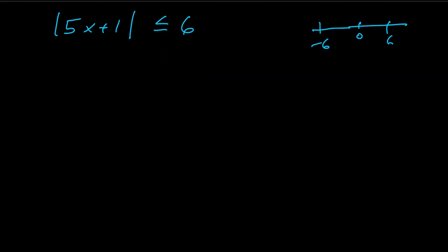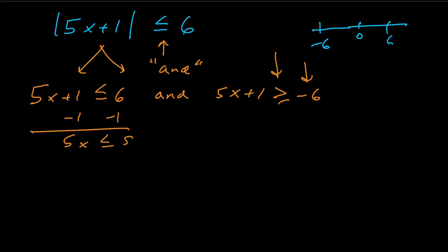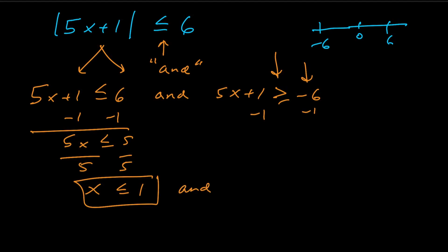Now for this problem: the absolute value of 5x plus 1 is less than or equal to 6. Since it's less than, we think of it as an 'and' type, intersection problem. We split it into two inequalities: 5x plus 1 is less than or equal to 6, and 5x plus 1 is greater than or equal to negative 6 — notice I flipped the inequality sign and changed the number to its opposite. Solving each individually gives x is less than or equal to 1.